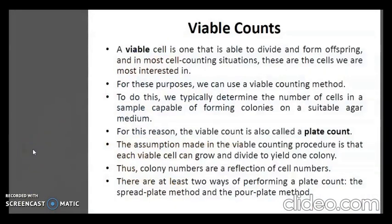That covers the direct counting methods. Now for the indirect method to determine the number of cells by plate count. Viable cells are those able to divide and form offspring, and these are the cells most relevant in most counting situations. To count them, we use a viable counting method, determining the number of cells capable of forming colonies on a suitable agar medium. For this reason, the viable count is also called the plate count method. The assumption is that each viable cell grows and divides to yield one colony, so colony numbers reflect cell numbers.